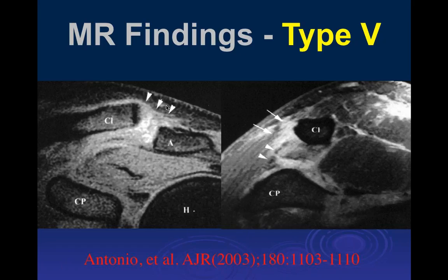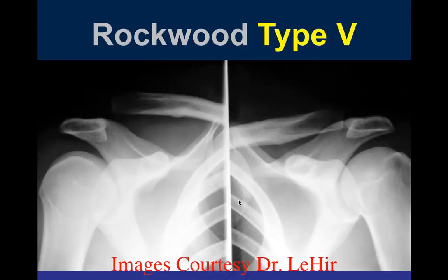With that inferior displacement, you often get tearing of the deep fascia below the trapezius muscle, along with AC and CC ligament injuries. The distal clavicle perforates the trapezius and these injuries cannot be reduced, making them definite surgical cases. Vascular concerns are also present. Type 5 injuries are uncommon because the forces required are enormous.